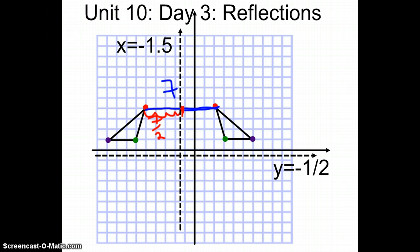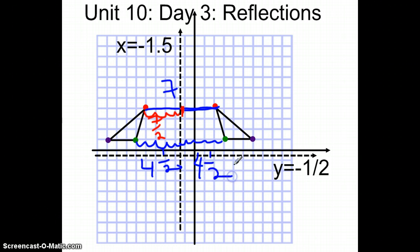Let's try another set of points to verify. Counting the distance between the green point and the line of reflection: one, two, three, four and a half. And from the pre-image green point to the line of reflection: one, two, three, four and a half as well. They are the exact same distance. Therefore this has to be the correct line of reflection.